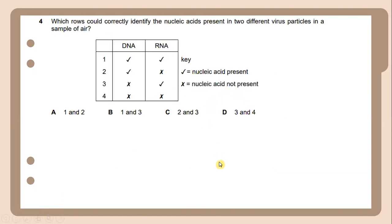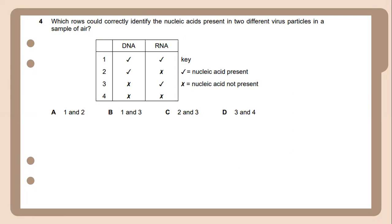Which row could correctly identify the nucleic acid present in two different virus particles? It is essential to know that a virus can either have DNA or RNA as its genetic material, but not both simultaneously. Therefore, the correct row would show one virus with DNA and the other with RNA.